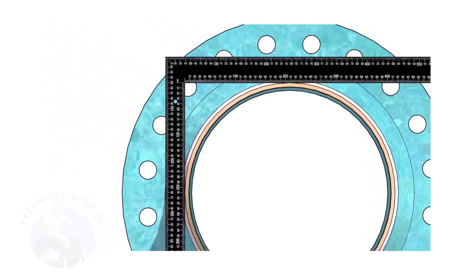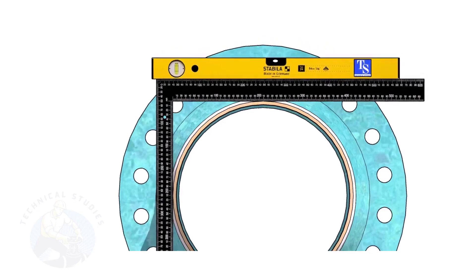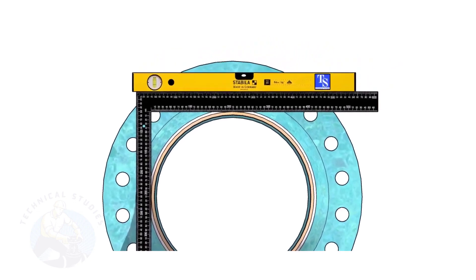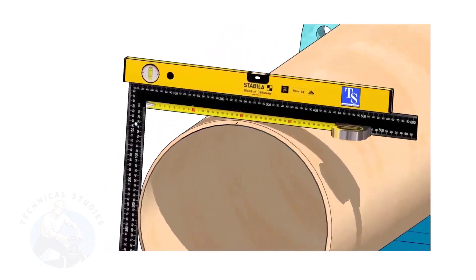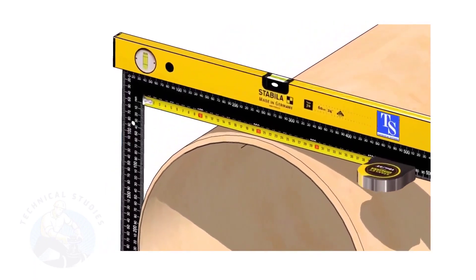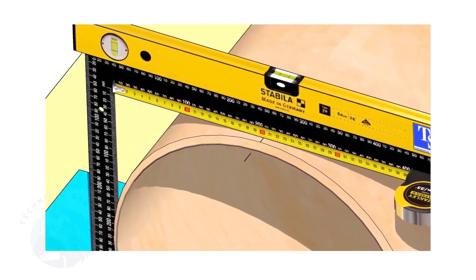Hold a large right angle on the pipe as shown. Put a spirit level on the right angle and correct the top level. Mark half OD of the pipe on the top side. Here, the half OD is 203 millimeters.